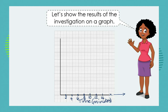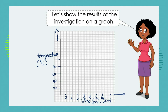On our y-axis, or vertical axis, we're going to record the temperature of the water in degrees Celsius. At the start of our investigation we might have water at about 20 degrees, then 40 degrees, 60 degrees, 80 degrees, 100 degrees, 120 degrees, and so on up the scale.